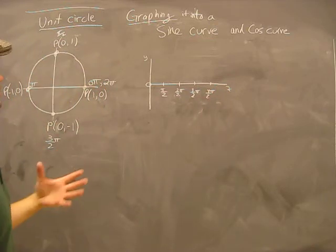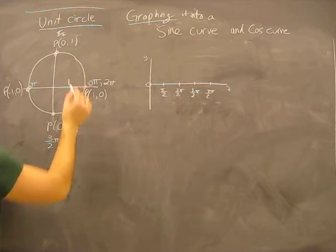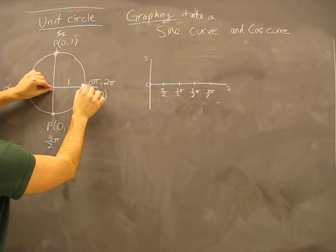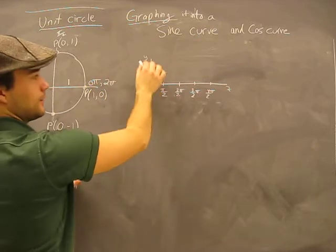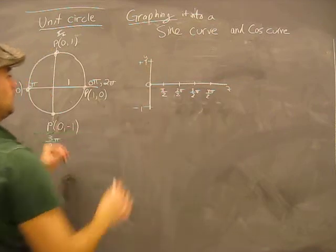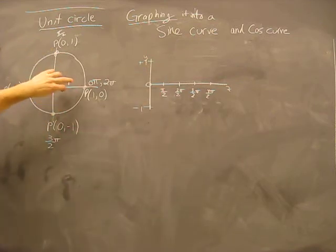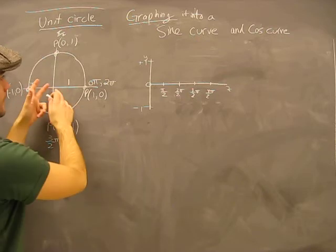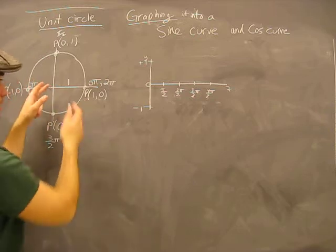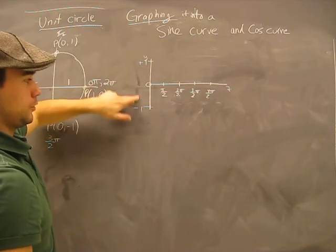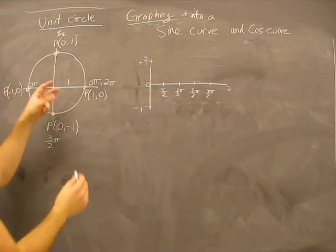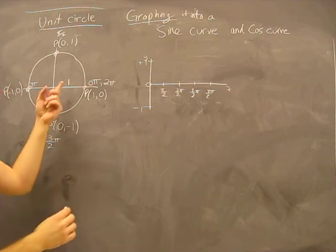What do we know about the amplitude? If this is a unit circle, that means the amplitude — the height of the curve — will be one and negative one. The farthest I can go from the origin is one in any direction: one in this direction, one in that direction. That's going to be the amplitude, because we're dealing with the unit circle, which has a radius of one.